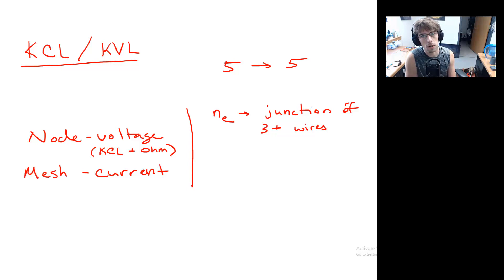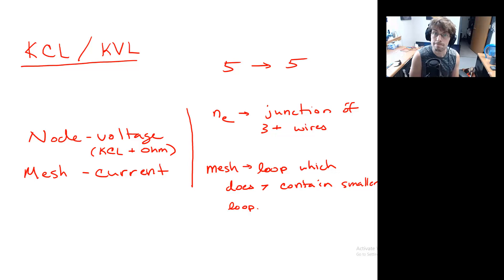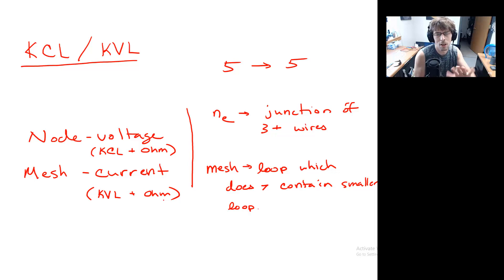The second technique we'll talk about this week is the mesh current technique. A mesh is the smallest possible loop in a circuit — a loop that does not contain any smaller loops. The mesh current technique takes advantage of KVL plus Ohm's law. Rather than applying KCL and KVL simultaneously on all five equations, we're just using one plus Ohm's law for the circuit analysis, and then we'll have to do some back substitution to get our final answers.